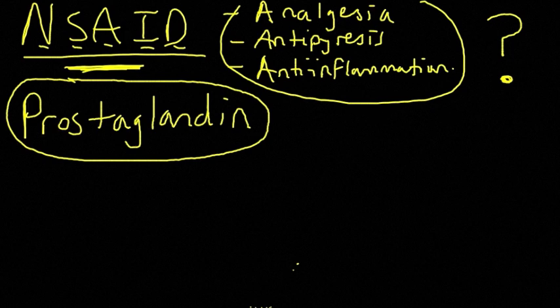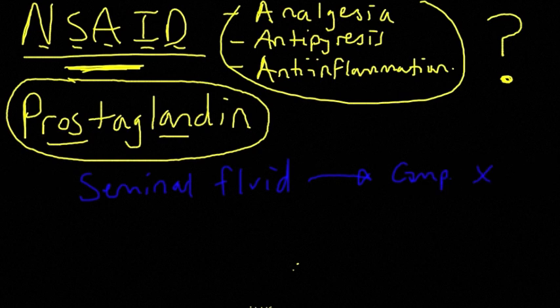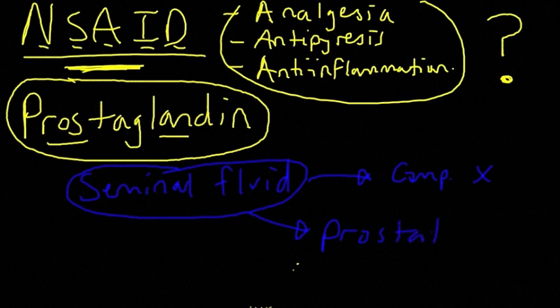Before I discuss any specifics of this, I'd just like to explain the name. In the 1900s there was a scientist who was studying seminal fluid. And this scientist isolated an unknown compound, so we'll call it compound X. And in his hypothesis, he thought that the compound was actually made in the prostate gland. And since he was working with limited information in some sense, he named this compound prostaglandin, for prostate gland.